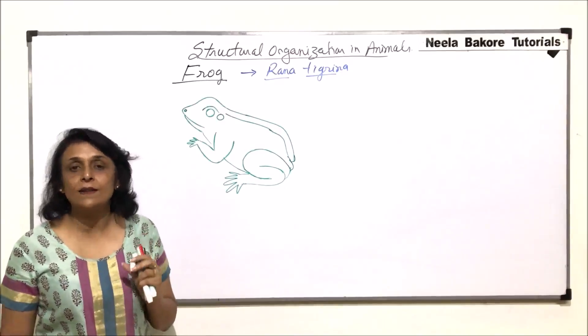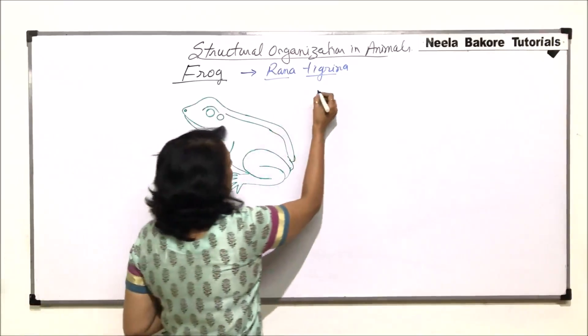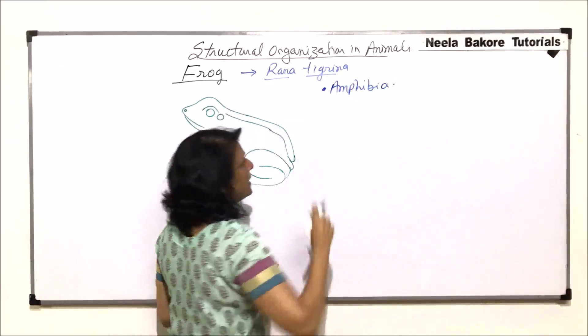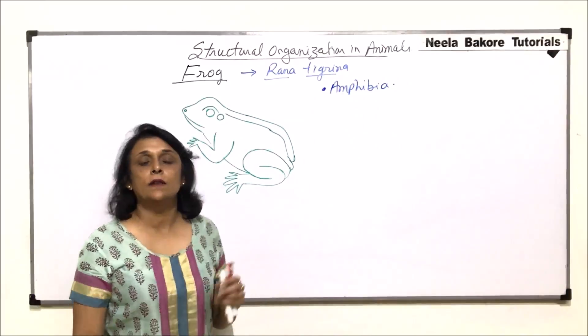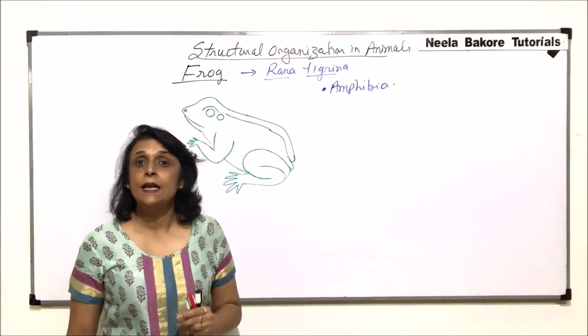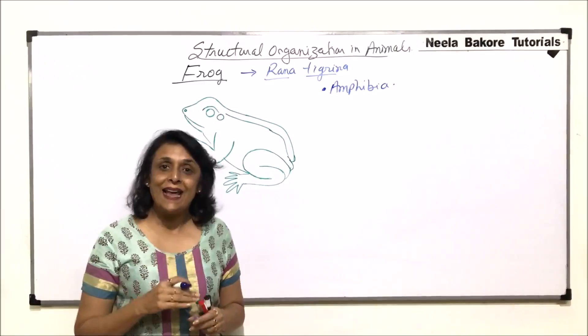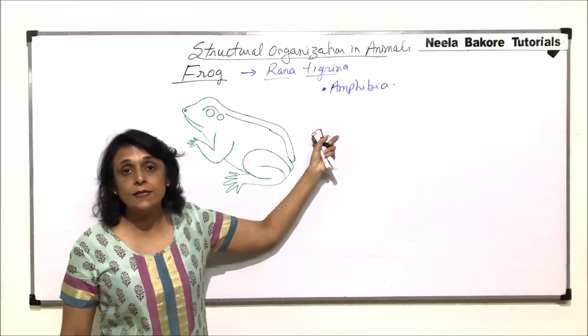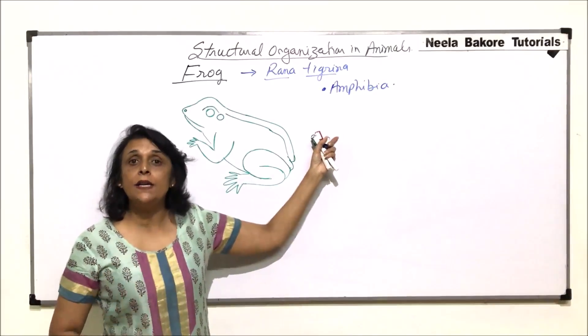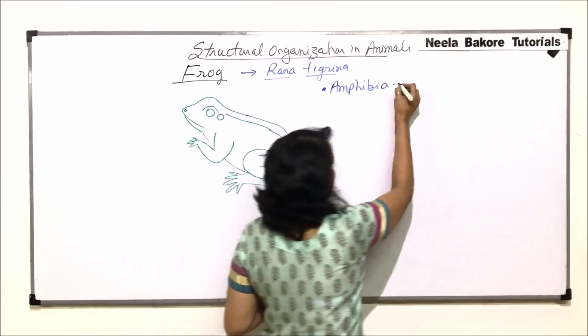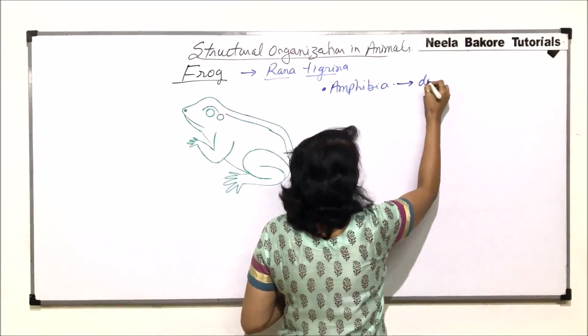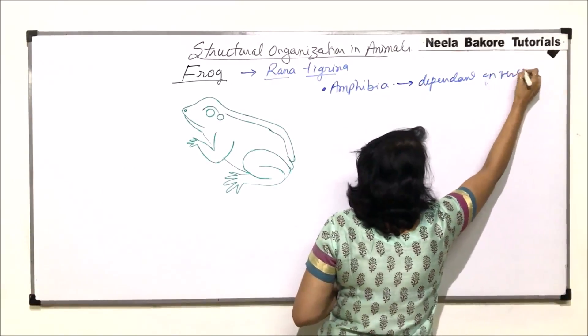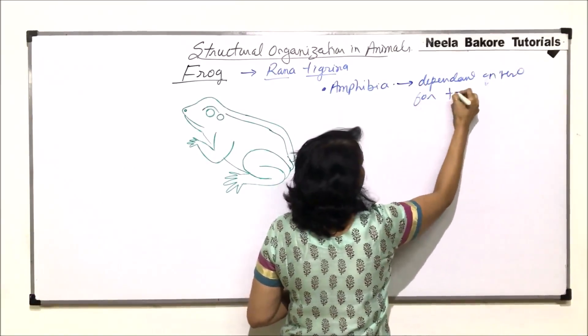Frogs are in phylum Amphibia. Why are they placed in Amphibia or the reason why they are called amphibians is they can survive on land as well as in water. But the true description of an amphibian is that they are dependent on water for reproduction.